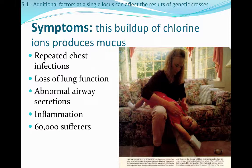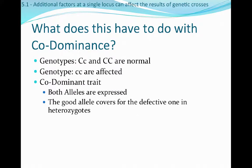Cystic fibrosis is pretty common — we see it show up in about 60,000 individuals each year. These individuals actually have to go through some pretty intense therapy, like pounding on the chest, to get the arms of the CFTR protein to open up and allow chloride to go in and out — what should happen normally doesn't with the mutated form of the gene.